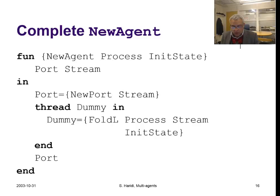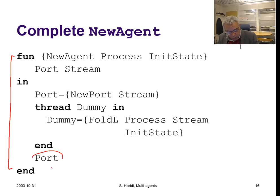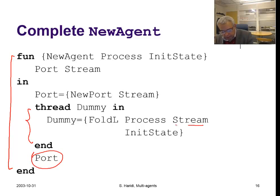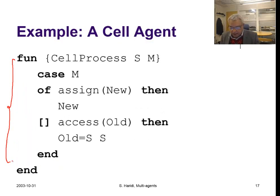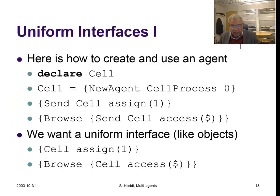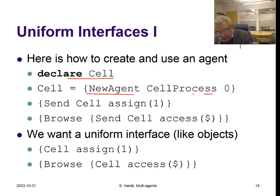Now we have a complete code for our new agent abstraction. Again, we return a port; our thread will go through the stream, apply the state transition function, and start from the initial state. Here is our cell state transition function. You can see how to use this abstraction: we declare a cell, create a new agent with 'new agent' using the cell process, initially zero — the cell is initially zero.